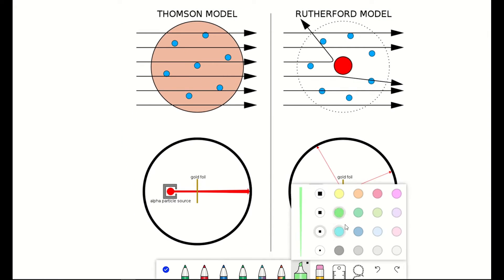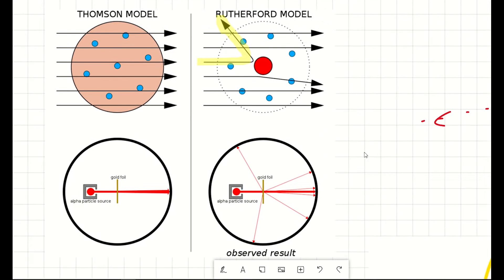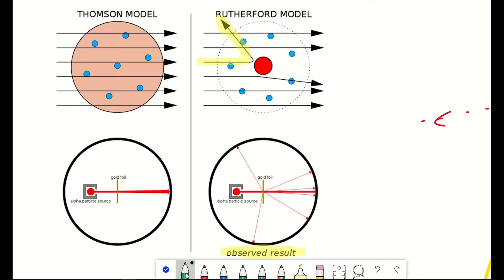But to their surprise, they saw particles reflected, and were like, huh? It showed that their prediction, or the previous predictions of the structure, were incorrect. They were proven wrong. But they were willing to accept that they were wrong and trust the data.